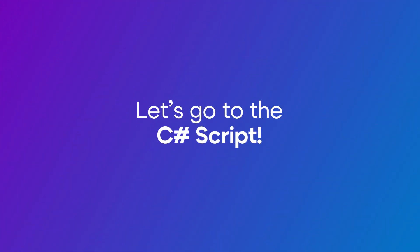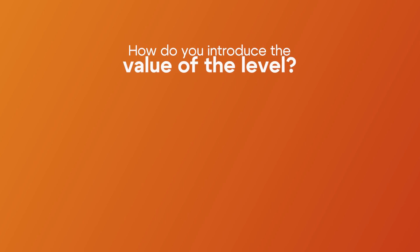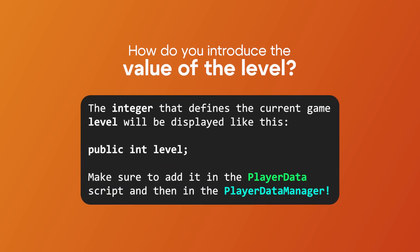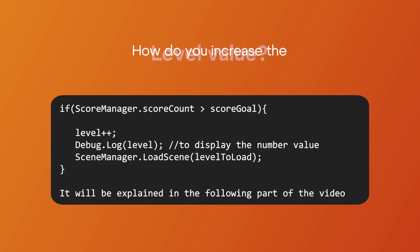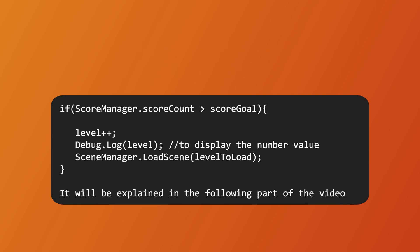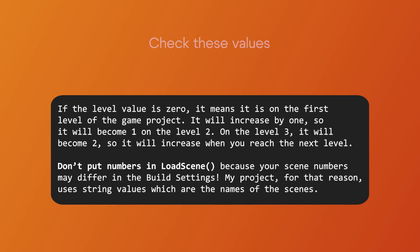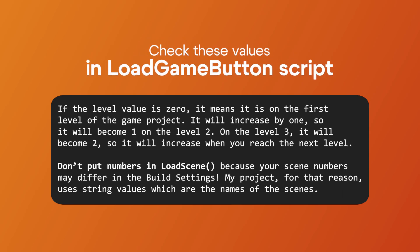In the load level script, for the integer that defines your current level, you need to make sure that it is checked in the void which contains the system of levels. If ScoreManager score count is larger than the score goal, Scene Manager Load Scene is the line that opens the new scene. If the value is 0, it means you are on the first level — Scene Manager Load Scene sample scene.